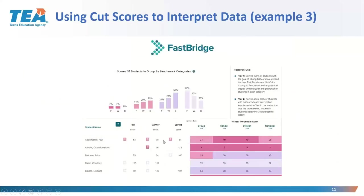Here's FastBridge, which also shows color coding — color coding is our friend. It gives you a wide range; pink indicates need of support, and the darker pink with an exclamation mark signals the student is very well below. On the left are individual scores, and on the right it shows you the percentages.